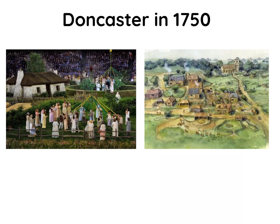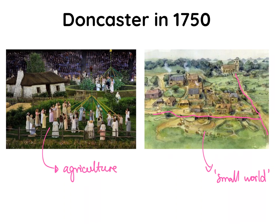We shouldn't underestimate the impact that this had on ordinary life. Life in a village during this period was seen as a very small world because of poor transportation. They relied on roads, and trade between towns was very limited. Towns revolved around agriculture, and as a result life was primitive in comparison to life during the industrial age. Doncaster was a very small village — essentially a collection of different hamlets.